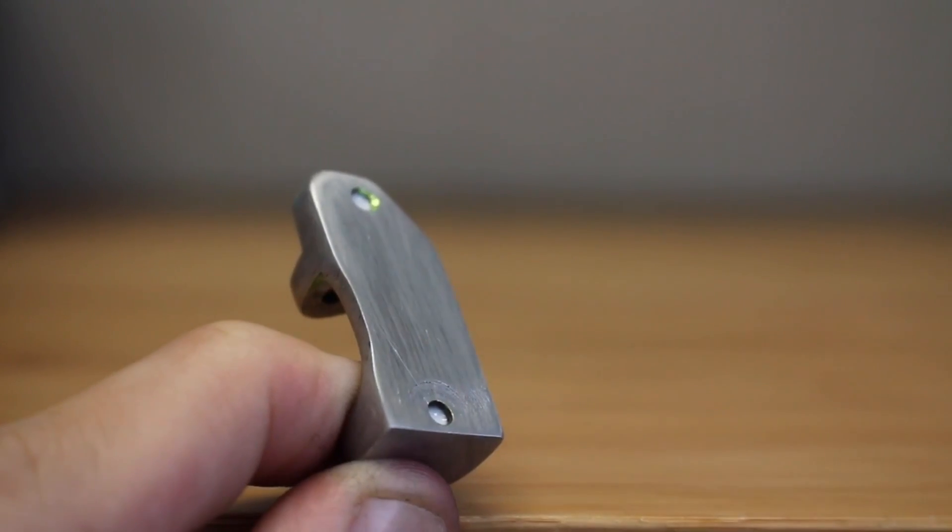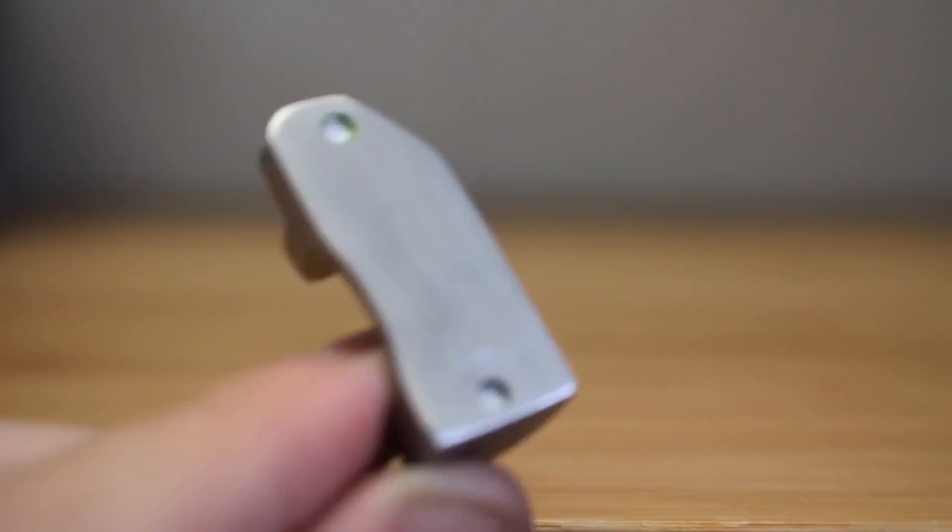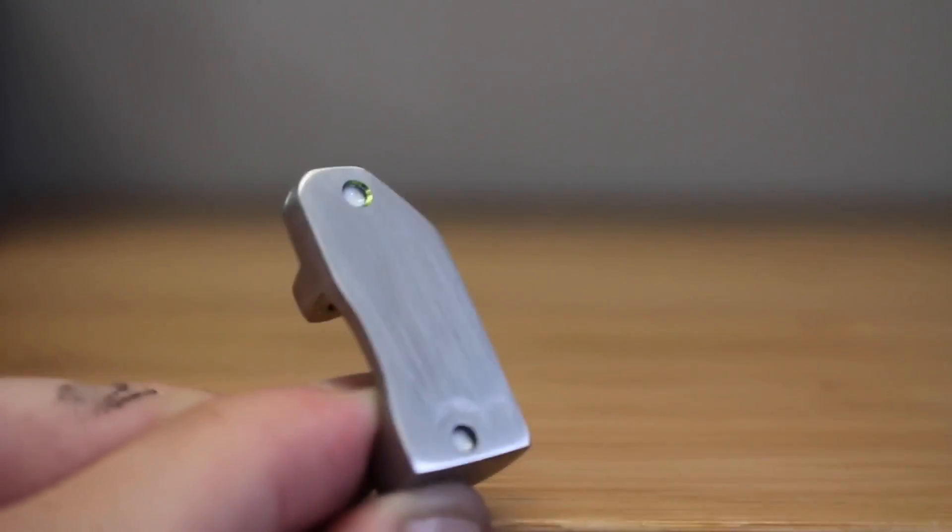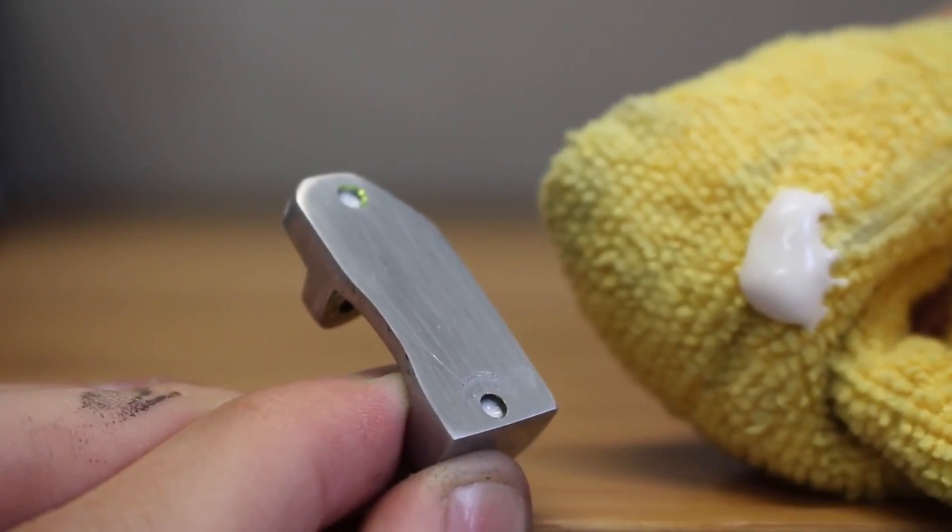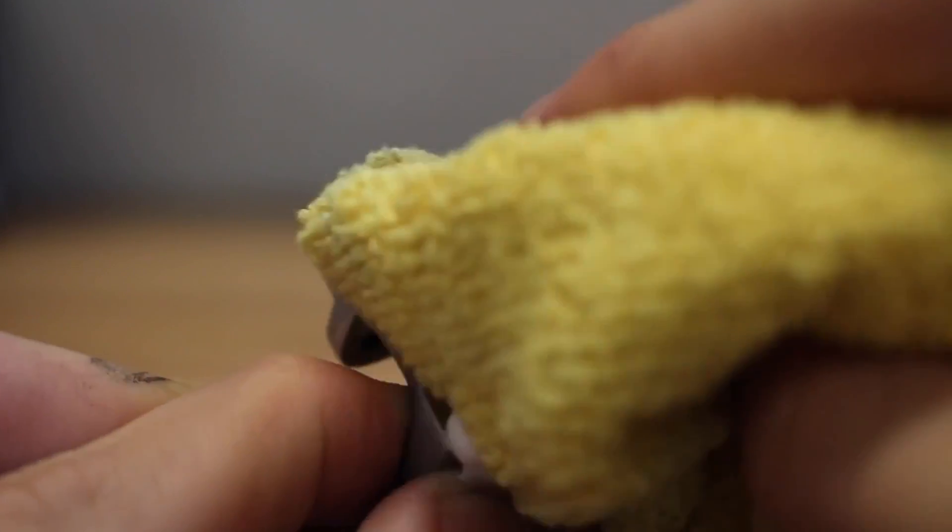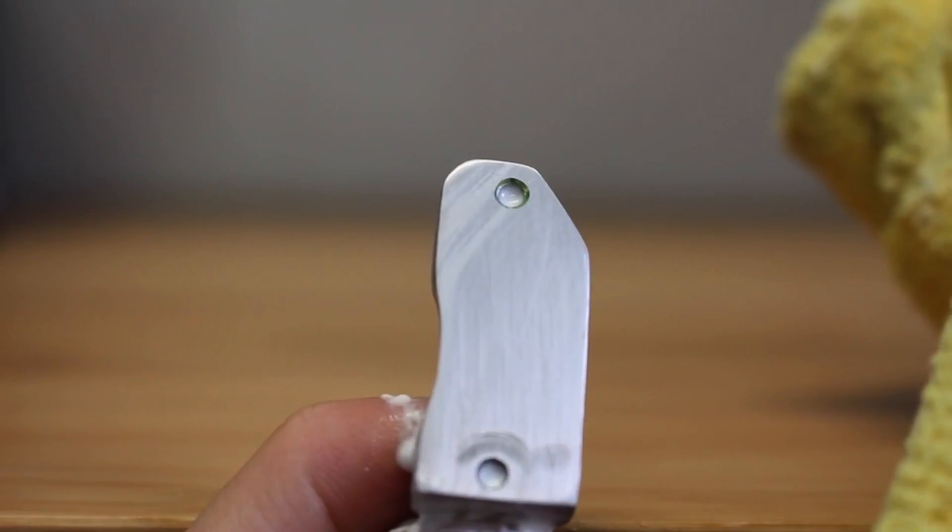After you've finished sanding, now you can go ahead and start buffing with a buffing compound. If you want to leave it like this with a matte finish, you can do that. But if you want to make it a little bit shinier, take a little bit of buffing compound. You really don't need much, just a little dab of it. And then just rub it in. And just keep working it. And you'll notice your towel should start to get a little bit black from the aluminum. And just keep working it until you can't see the polish on the finish anymore. And you should be good to go.